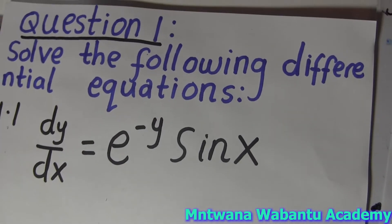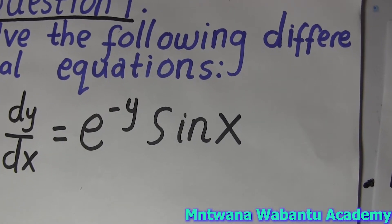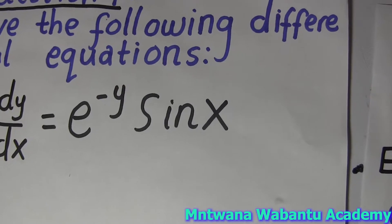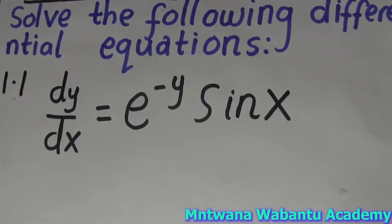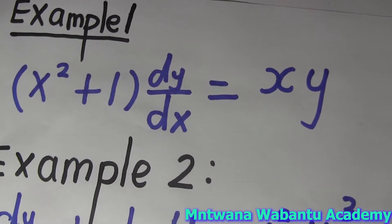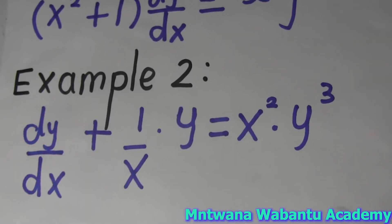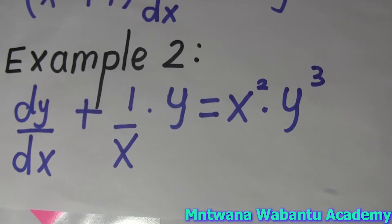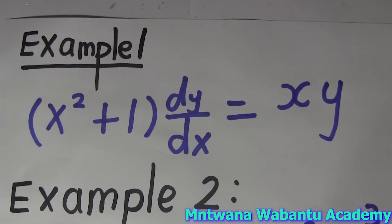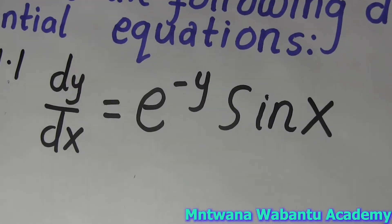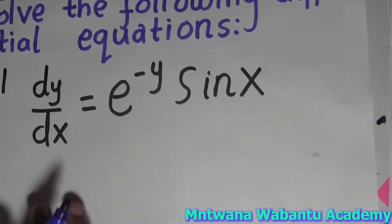There are different types and formats of differential questions. This first example is variable separation - you can call it separable variables. Now I'm going to show you how to separate this. We have another example here, and this one here is not separable. I'll show you all of them. Let's go to the first example and see why these are separable and why this one is not.